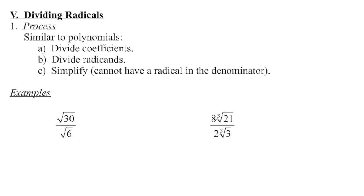Similar to when we multiply radicals, when we divide radicals, we're going to first divide the coefficients, we're going to divide the radicands, and then we're going to simplify. When we are completely simplified, we cannot have a radical in the denominator.